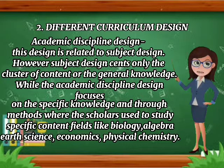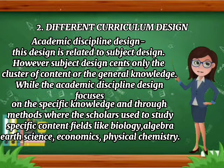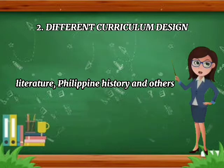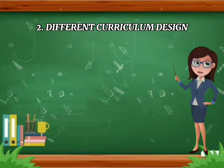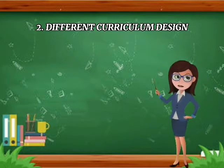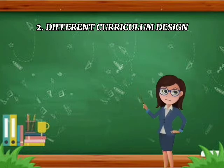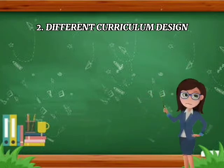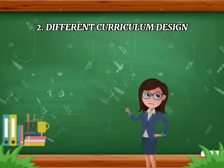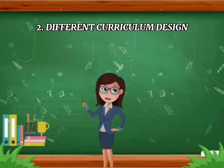Academic disciplines design is related to subject design. However, subject design centers only on clusters of content or general knowledge, while academic discipline design focuses on specific knowledge and the methods scholars use to study their fields — like biology, algebra, earth science, economics, physics, chemistry, literature, or Philippine history. This design is mostly used at the college level, where students are more mature and moving toward their career path.